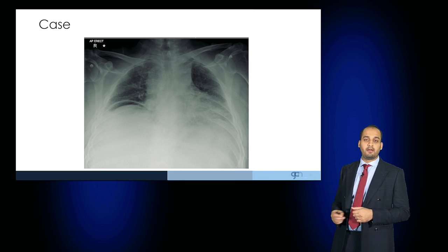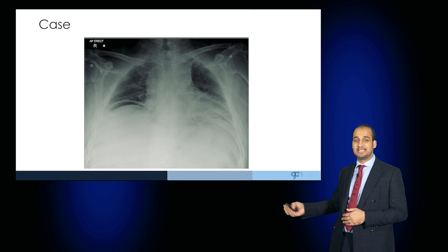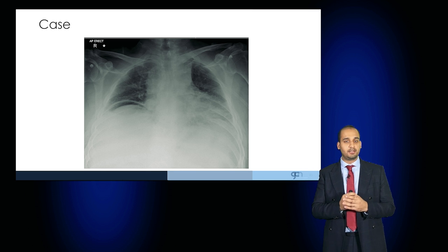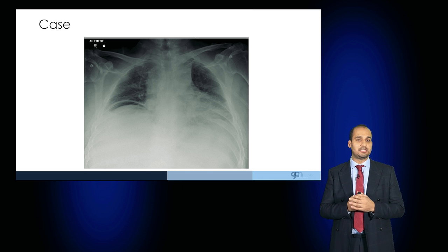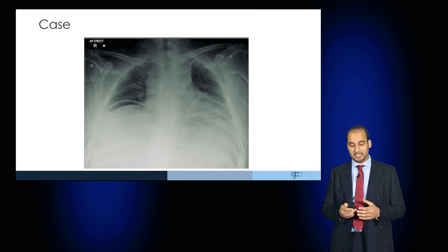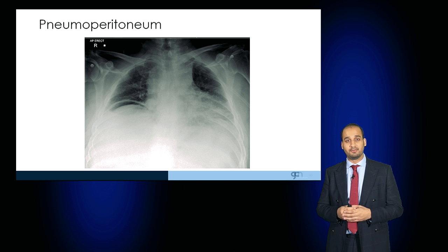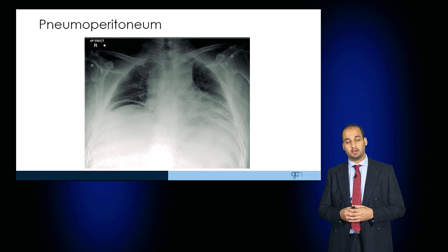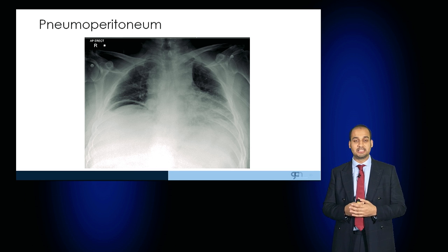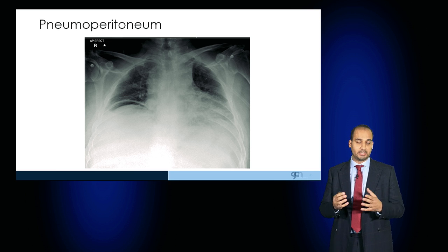This is a very important radiographic finding. If you look at the right hemidiaphragm, there is air under the diaphragm — this is a case of pneumoperitoneum. This suggests that the patient has had a perforation of a viscus leading to pneumoperitoneum. This patient would require emergency surgical management, should be made nil by mouth, a CT scan would be required to determine the cause, and they would be taken to theatre.